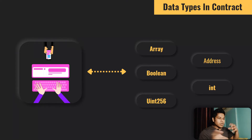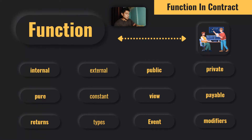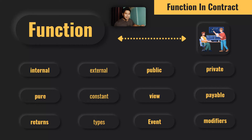Once you have your data structure, unique identifier, and data types defined, you move to the fourth part — functions. Without functions your contract is useless. There are many variables that go into functions: internal, external, public, private, pure, constant, view, payable, returns types, events, and modifiers. You have to keep all these in mind — whether you should use private or public, external or constant, and what impact each will have on the function's execution. You can see how we are easily breaking down the entire smart contract.